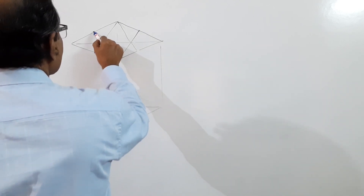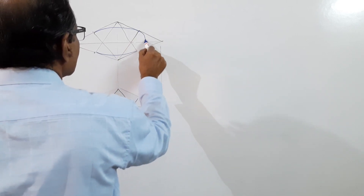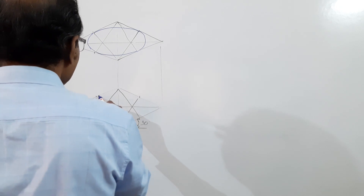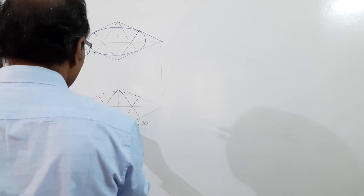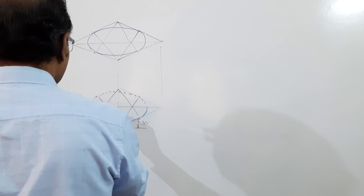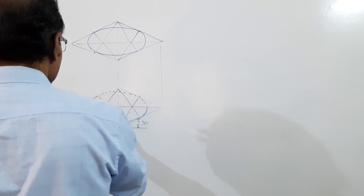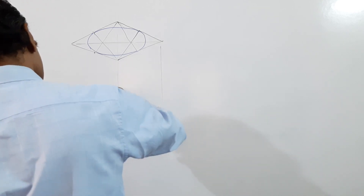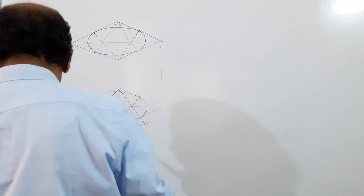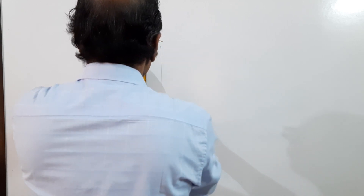Using this center and this radius, draw an arc; using this center and this radius, draw an arc; then this center and this center draw their respective arcs. Do the same for the bottom ellipse — since it is going to be dotted, draw part of it as dotted and part as firm. Then draw the two tangent lines on either side which represent the curved surface of the cylinder.